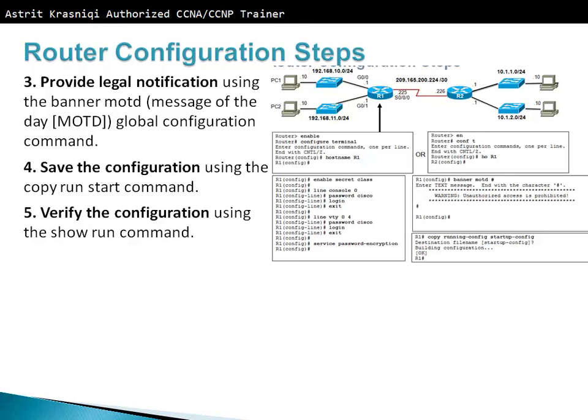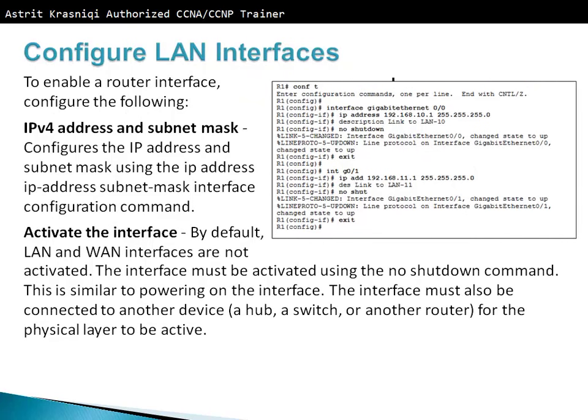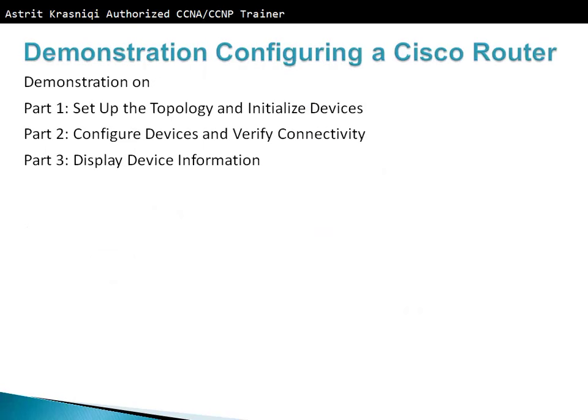Save the configuration using 'copy running-config startup-config', and use 'show running-config' to verify. For LAN interfaces, assign an IP address including subnet mask. By default, all interfaces on a router are down, so you must use the 'no shutdown' command to activate them. On switches, interfaces are up by default — shut down any ports with no connections.